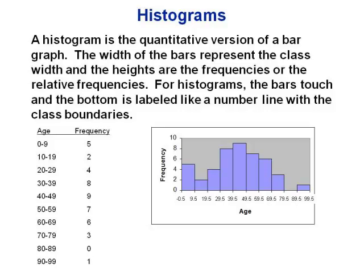The heights still represent the frequencies, but the bars are labeled a little differently. Instead of labeling each bar with the class, the edges of the bars are labeled with the boundaries — the numbers in between the classes. Another option is to label the midpoints, putting a tick mark in the middle of each bar. Either way, the x-axis goes from smallest to largest, so you cannot put the bars in order from highest to lowest like you can with qualitative data.